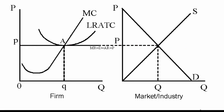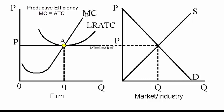Productive efficiency. Let's find productive efficiency on this individual firm graph. Productive efficiency occurs at the lowest point on the average total cost curve. This is at point A. Not only is this firm productively efficient at point A, it's also allocatively efficient because the price paid by the consumer is equal to the marginal cost of the last unit produced.